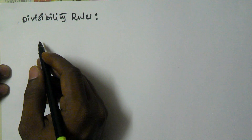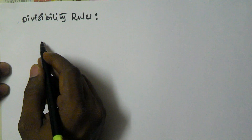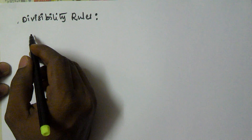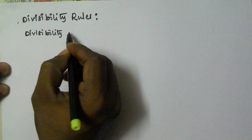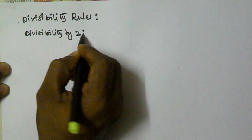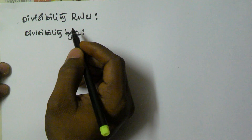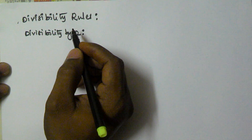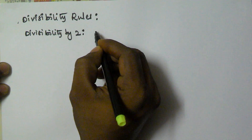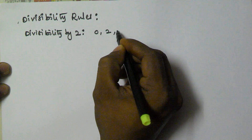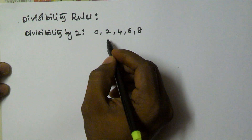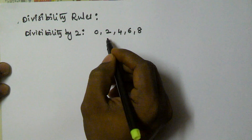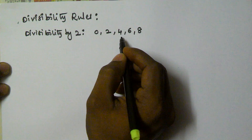Hello friends, in this video I am going to explain the divisibility rules. First of all, we see the divisibility by 2. A number is divisible by 2 if its unit digit is 0, 2, 4, 6, or 8.